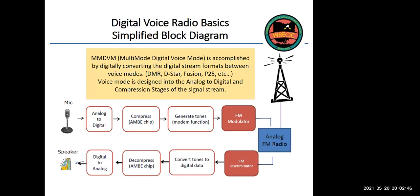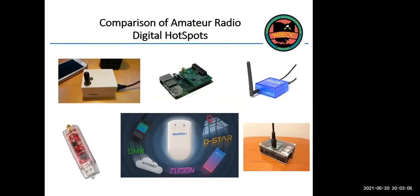What MMDVM does is rewrite the protocol word and make it into anything we want without violating any of the licensing features of the AMBE chip. The MMDVM hotspots don't contain AMBE chips — all the conversion is done in a little microprocessor. Most of them are Raspberry Pi-based. They come in different flavors and types.